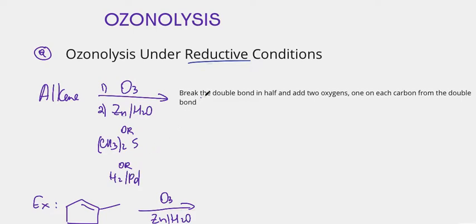Here I wrote out how to figure out the product. Basically you will break the double bond in half and you will add two oxygens, one on each carbon from the double bond.